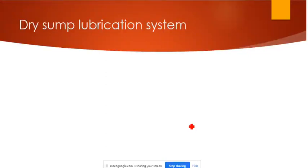We are going to see about the dry sump lubrication system. What is the difference between wet sump and dry sump? We all know what a sump is — it is the place at the bottom of the engine where the oil gets collected. This is true for bike engines, car engines, and all types of engines.